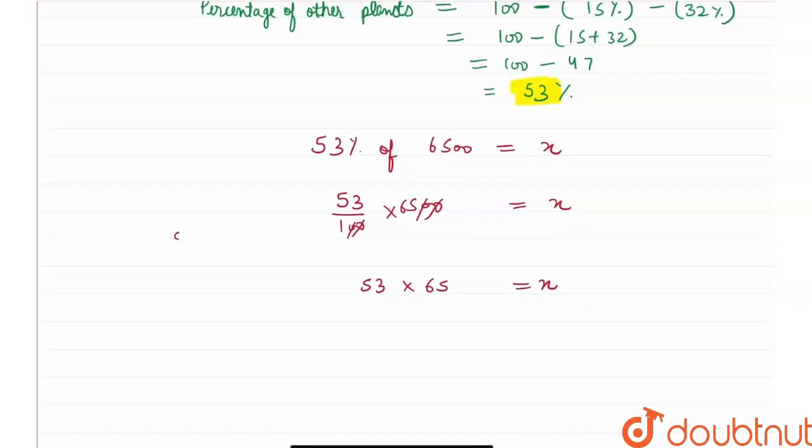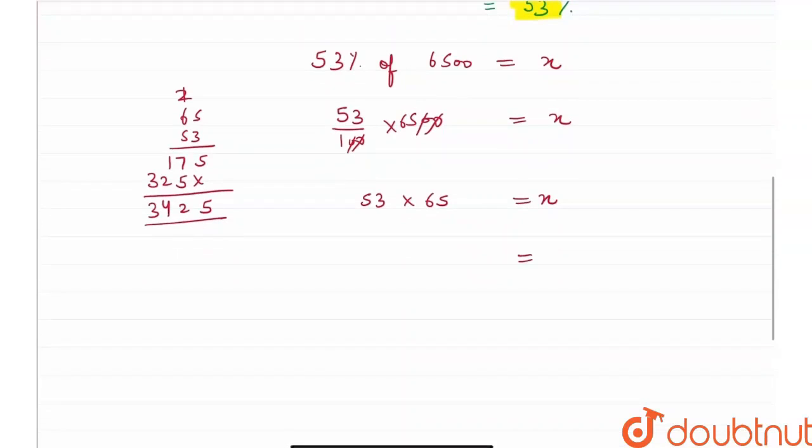Let's solve it here. 65 times 53: 5 times 3 is 15, 6 times 3 is 18, 175. And 5 times 5 are 25, 5 times 6 is 30, would be 32, it would be 3425. Therefore my